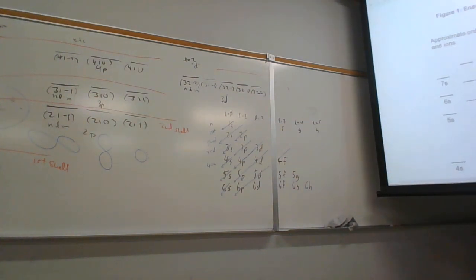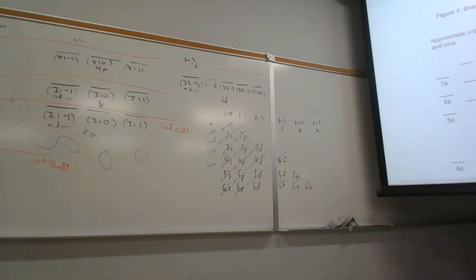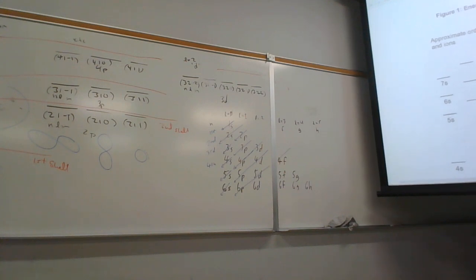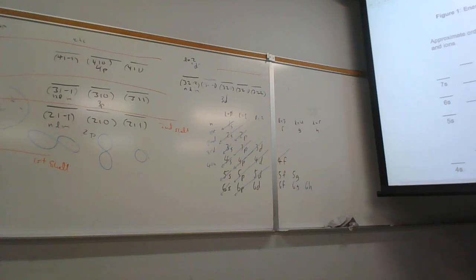The f sub-shell - l equals 3 - has how many orbitals? Going from 4,3,-3 through 4,3,-2, 4,3,-1, 4,3,0, 4,3,1, 4,3,2, 4,3,3 - that's seven orbitals. When l equals 3, m ranges from minus 3 to plus 3.